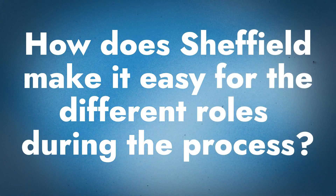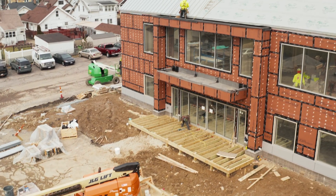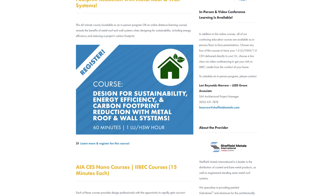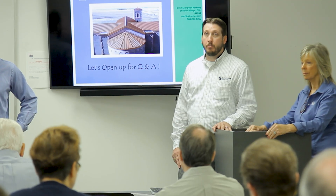Sheffield Metals aims to have a touch point in every part of the commercial building process. From an architectural standpoint, Sheffield wants to be a resource for information — architects on commercial projects are thinking about hundreds of things, with the standing seam metal roof being just one. Sheffield serves as an educational resource for the architectural community, offering AIA-accredited content and courses through their website where architects can earn continuing education credits. They also travel to do on-site lunch-and-learns at architectural firms.